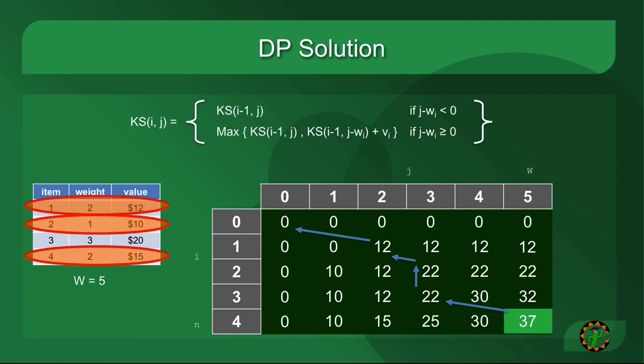There you have it — a dynamic programming solution to this problem, which is obviously much faster than a brute force or recursive solution. It's still an NP problem, but this is considered one of the easier NP problems to solve. It is not solving it in polynomial time, although it looks like it because it appears to be just N times W. This is a problem in what's called pseudopolynomial time — the actual storage size used to represent W is still growing at an exponential rate, so it's not quite a polynomial solution.